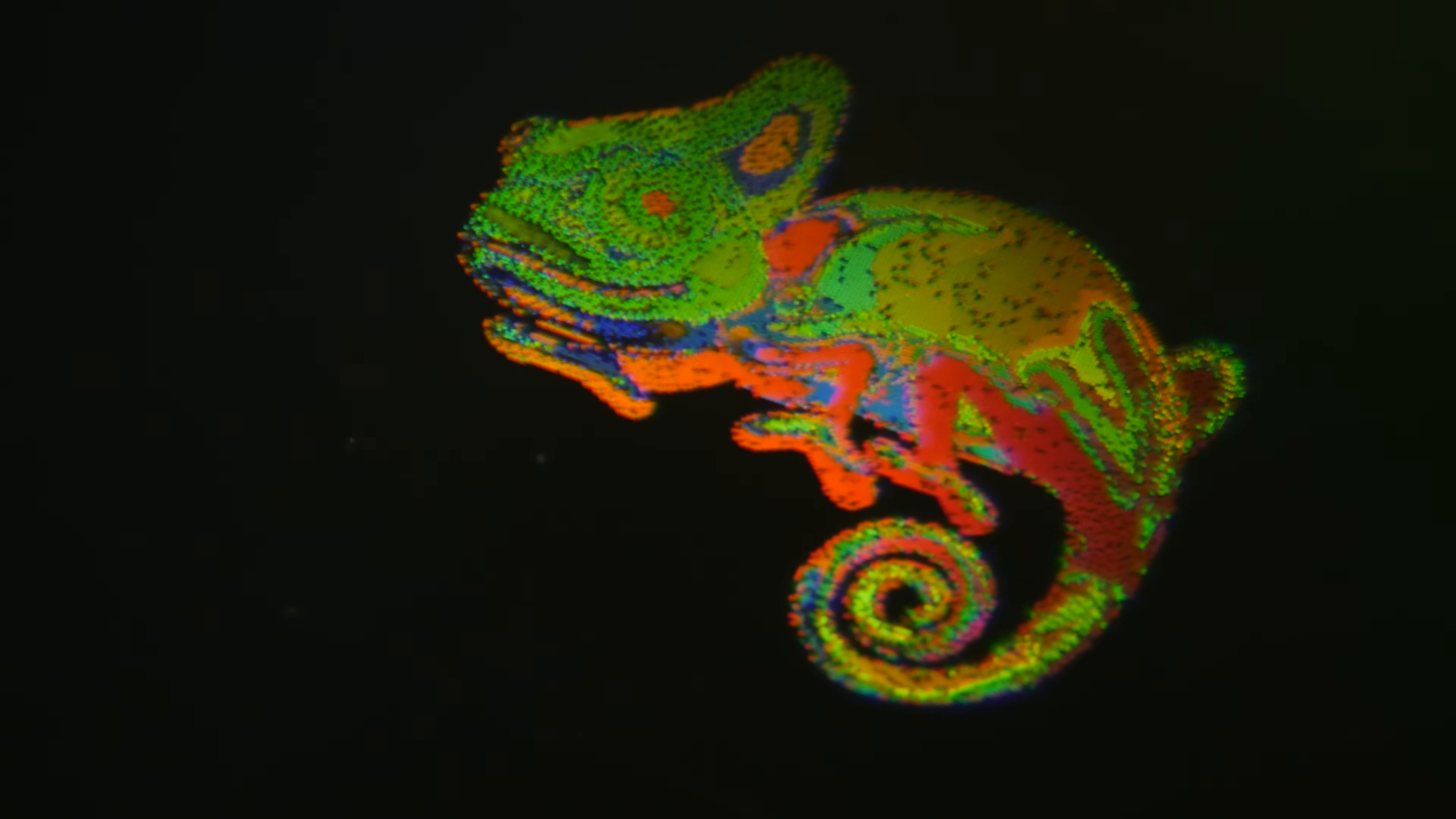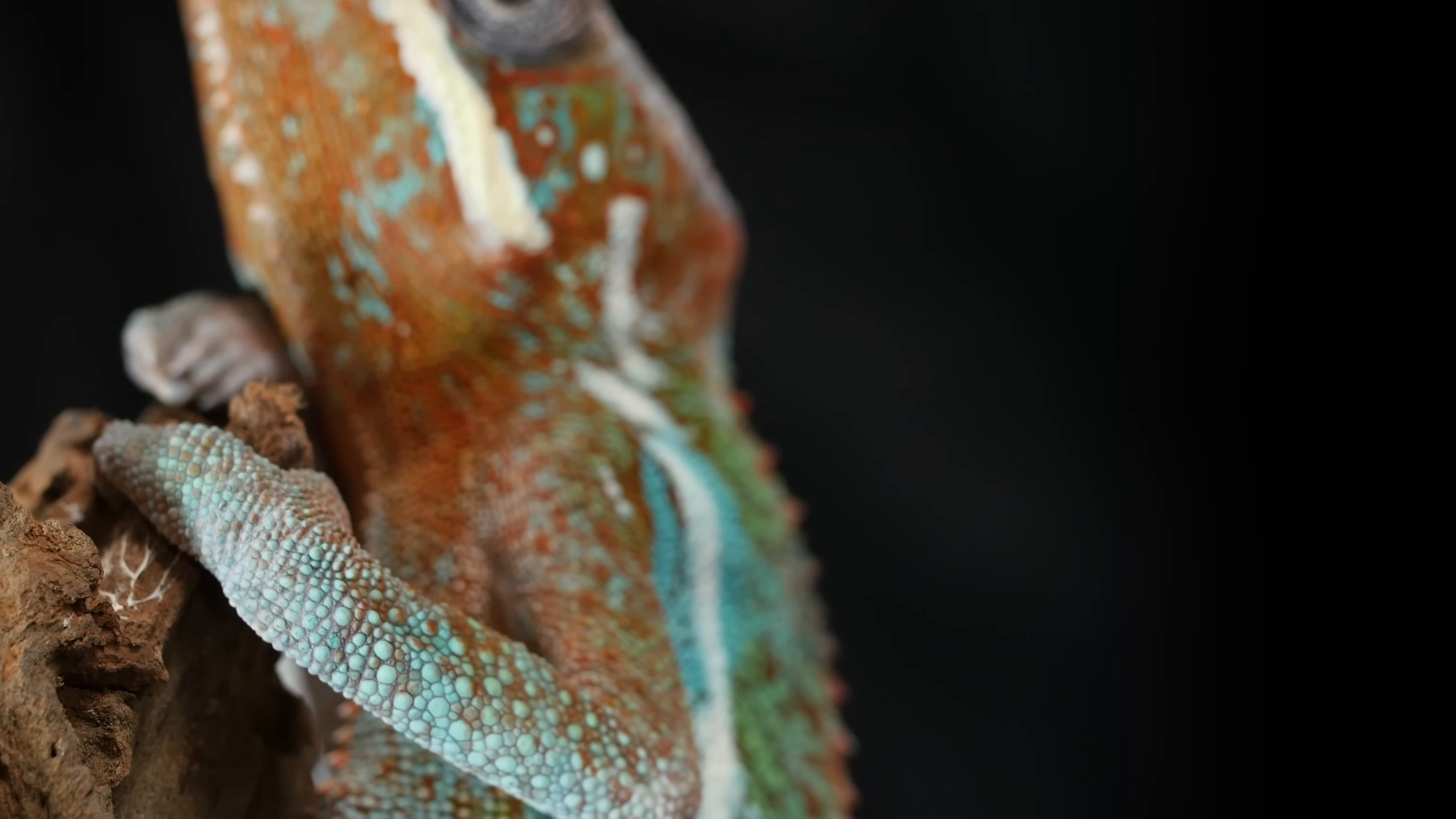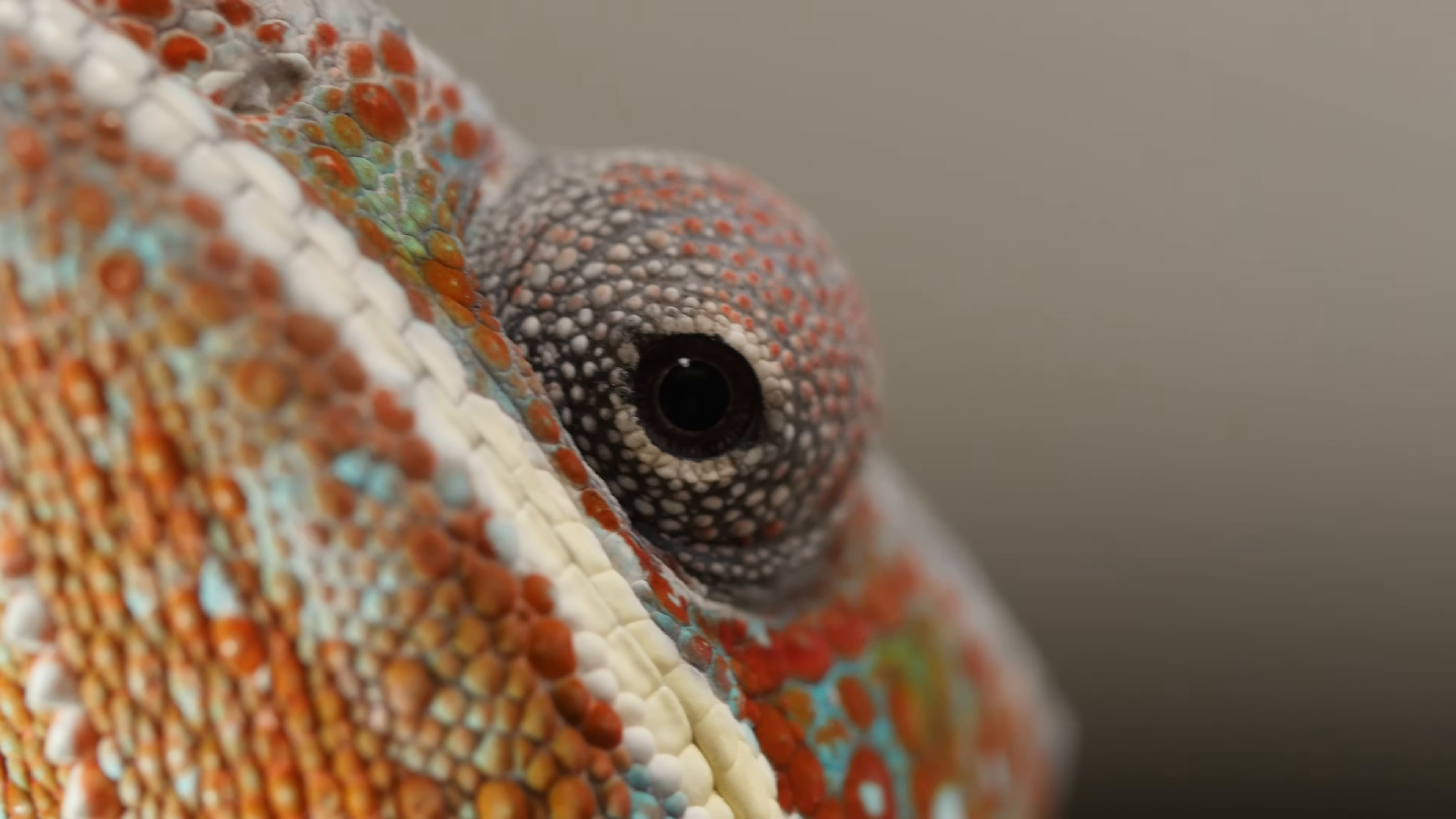Well, almost. This synthetic chameleon skin has just one layer of nanoscale arrays. The salt crystals in real chameleon skin are stacked in several layers, which makes their skin some of the most colorful and complex in the animal kingdom. They produce colors that aren't even visible to human eyes.